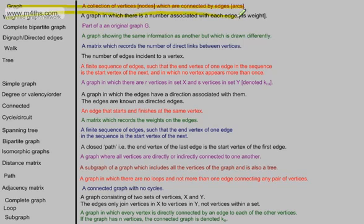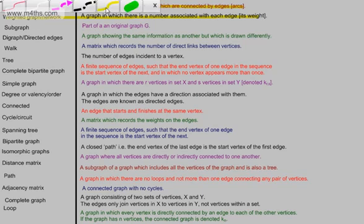Each time now that I'm writing through these, it means that we don't need to consider them again. Part of an original graph G. That's what we call a subgraph. The original graph might have, for example, ten vertices in it. The subgraph might only connect up three. A subgraph is part of an original graph G.